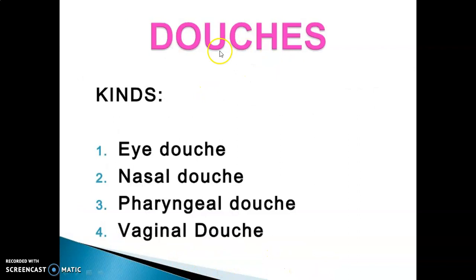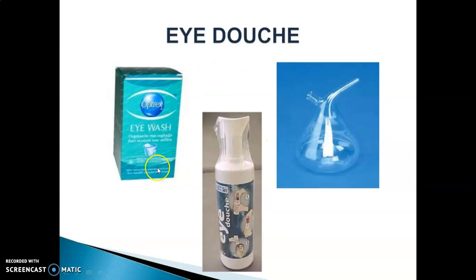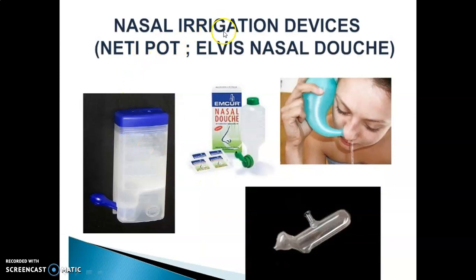Kinds of douches include: eye douche, nasal douche, pharyngeal douche, and vaginal douche. Eye douches — some examples are shown here. Nasal irrigation devices include the neti pot and Elvie nasal douche. Some figures and diagrams related to nasal douches are also shown.